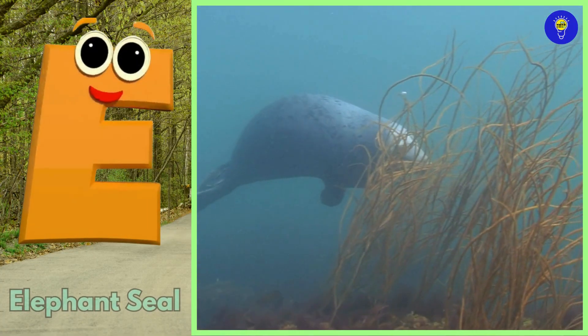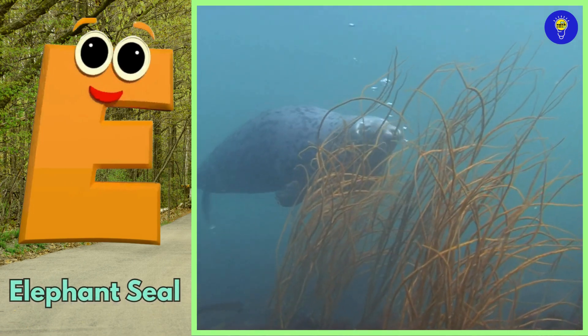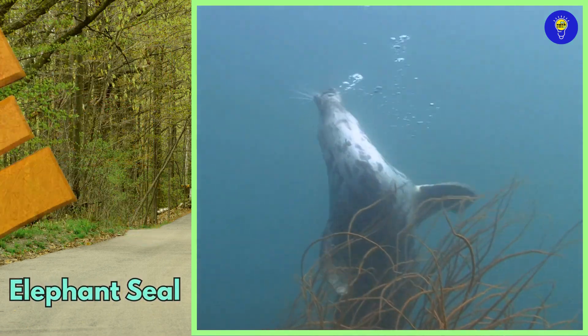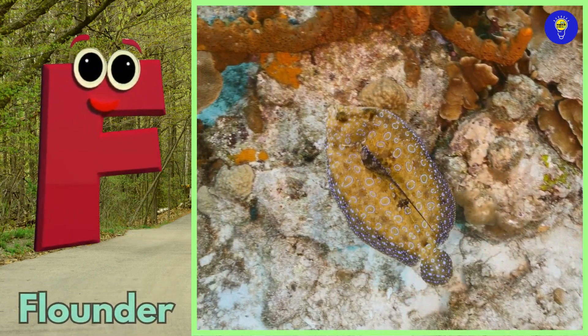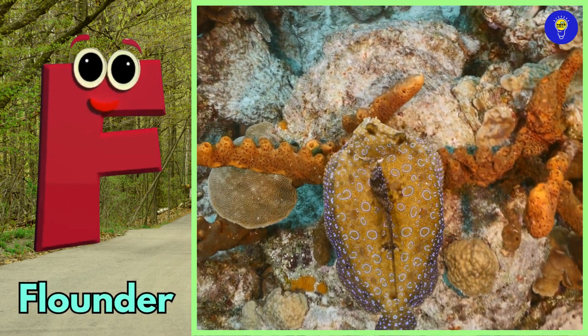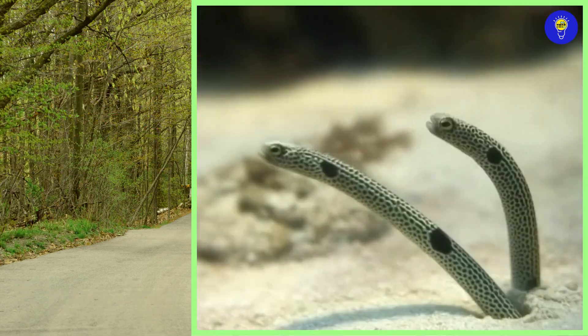E is for elephant seal. F is for flounder.